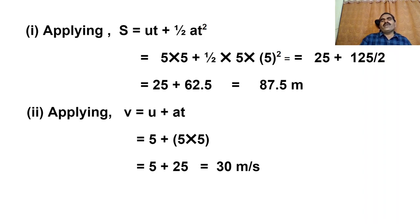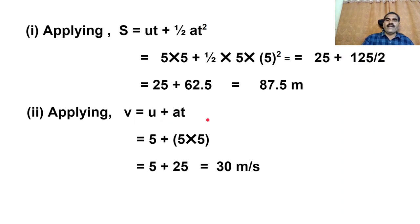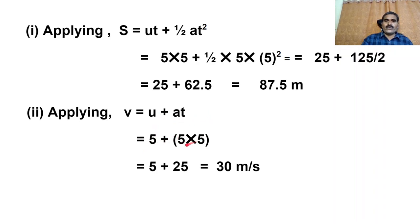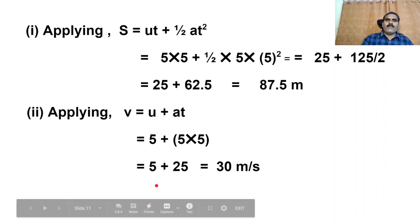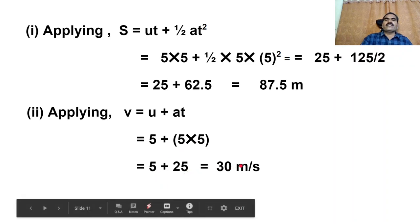For the final velocity, we need the first equation of motion: V equals U plus AT. That equals 5 plus 5 into 5 equals 5 plus 25 equals 30 meters per second.